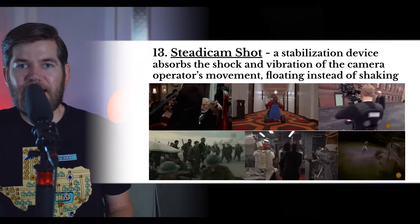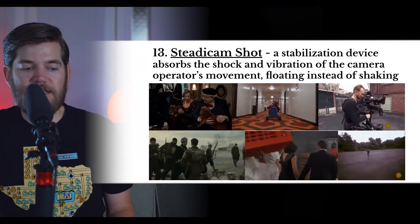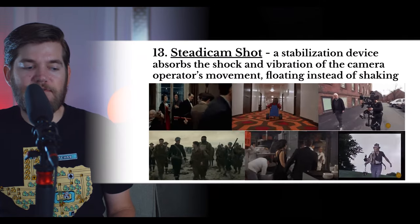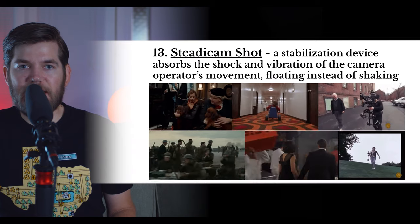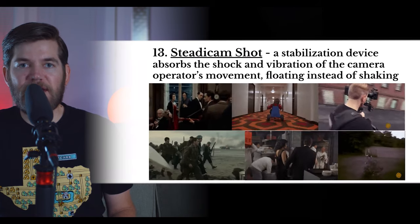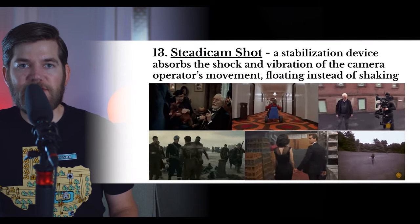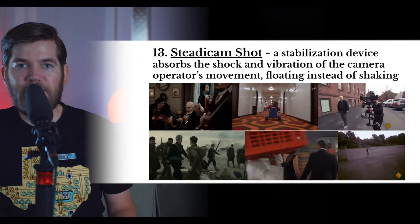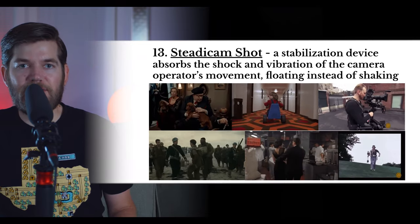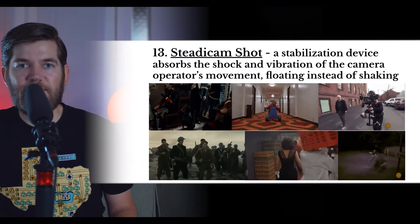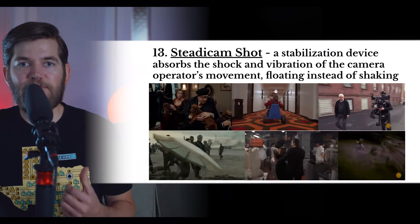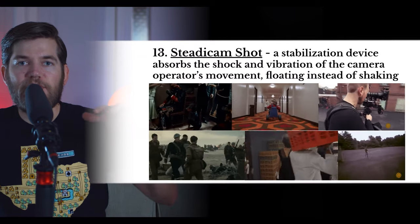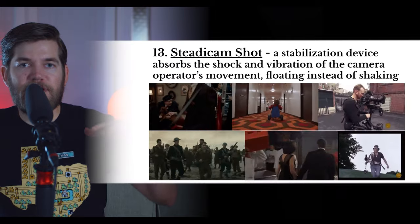Next up we have the Steadicam shot, and this is the solution to handheld camera movement. The Steadicam is a stabilization device which absorbs the shock and vibration of the camera operator's movement, floating instead of shaking. It will not be perfectly smooth movement, but it will smooth out the bumps and shakes of normal handheld movement. Steadicam shots float or glide through a scene, so the bumps appear more as slow floating bobs as if the camera were floating in the air.